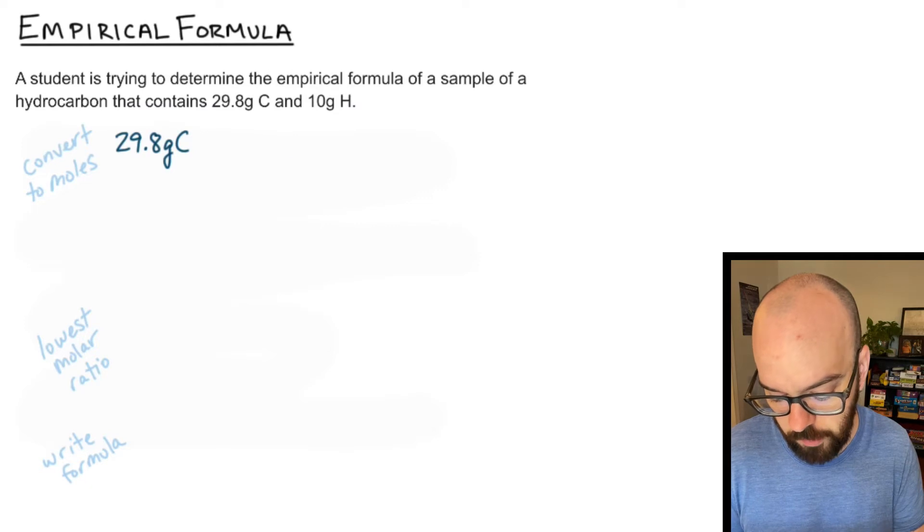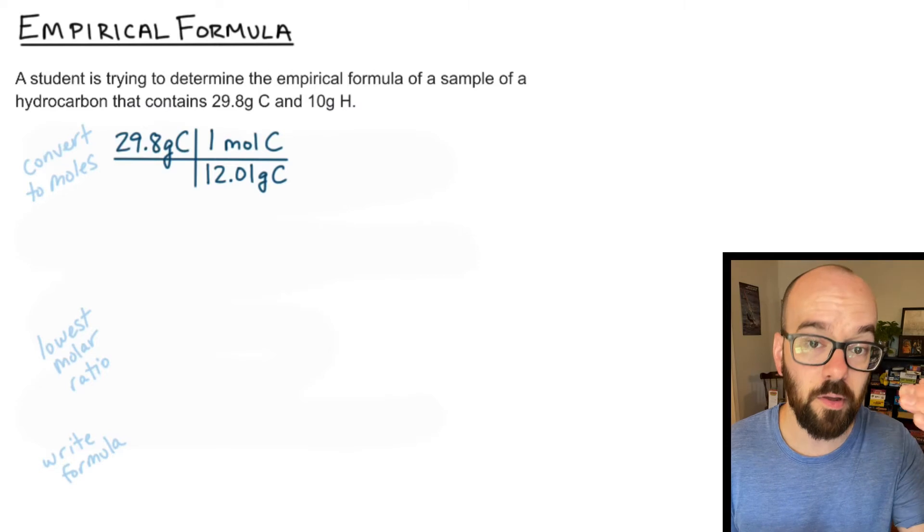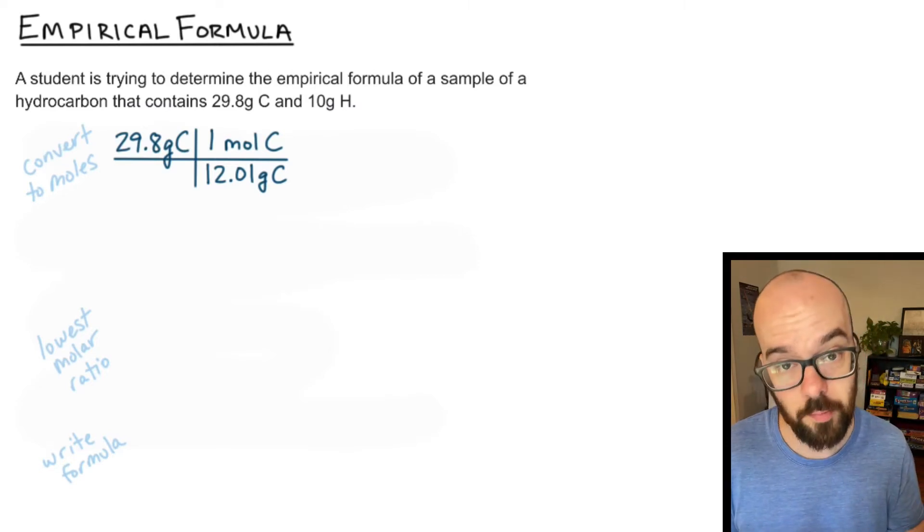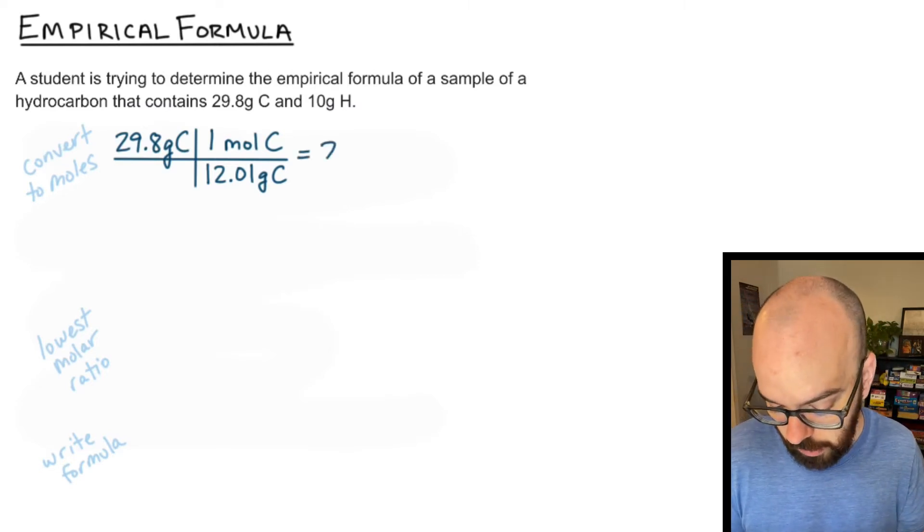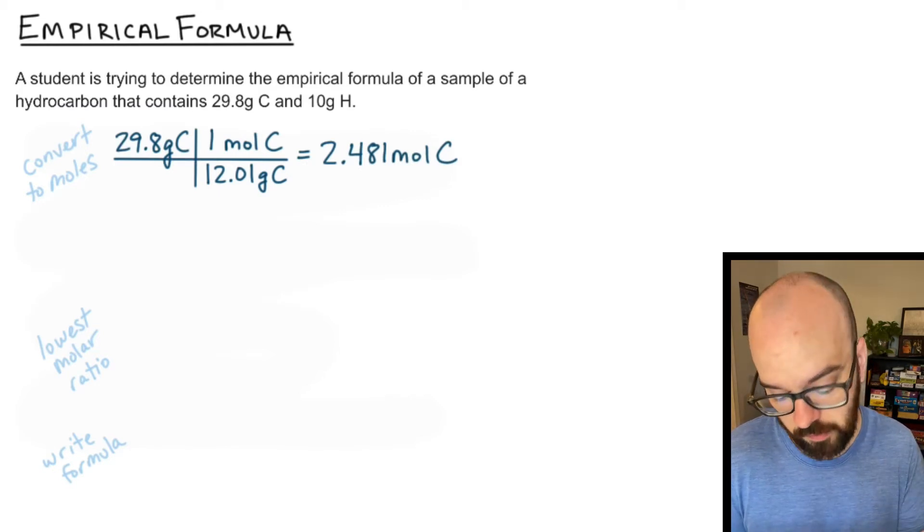29.8 grams of carbon and I'm going to set up my t-chart here and I have to have 12.01 grams of carbon in the denominator so the grams of carbon will divide out with grams of carbon and I'm left with 2.481 moles of carbon. So I converted from grams of carbon to moles of carbon.